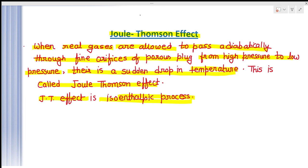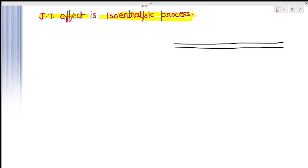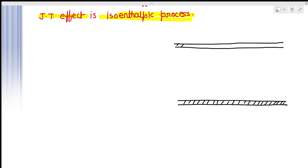Now see its instrumentation. In the Joule-Thompson effect we take a system in which the walls are adiabatic — meaning there is no exchange of heat through the system. This is our system and it is surrounded by adiabatic walls.